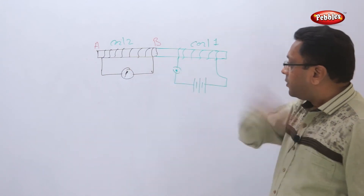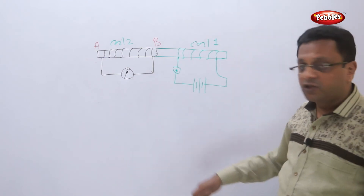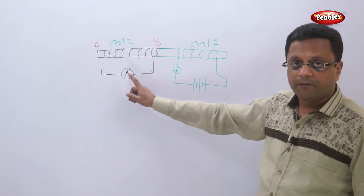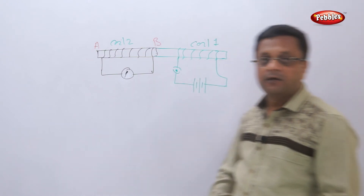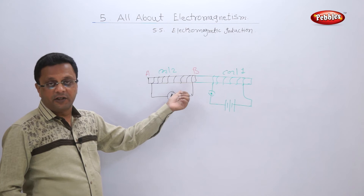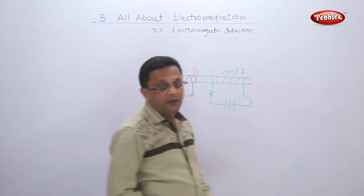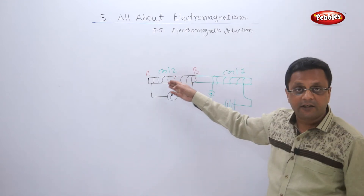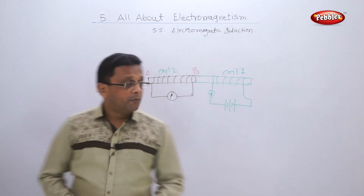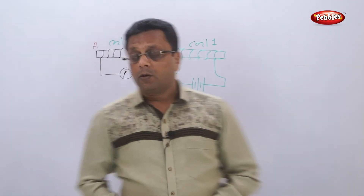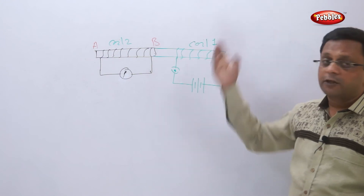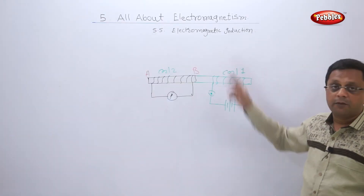When I close the key in coil 1, current flows momentarily and the galvanometer shows deflection, then becomes zero once current is steady. When I open the key and break the circuit, the needle deflects again and then returns to zero. So whenever there is a change in the electric current in coil 1, current is induced in coil 2 in the vicinity, because the current generates a magnetic field which induces electricity in coil 2. This was first observed by Michael Faraday.